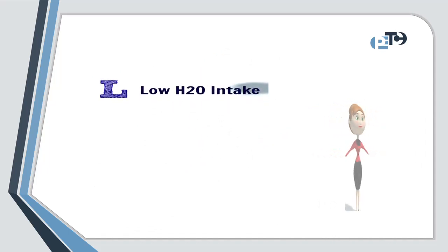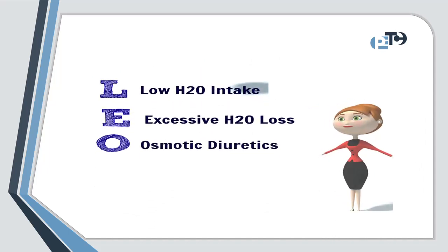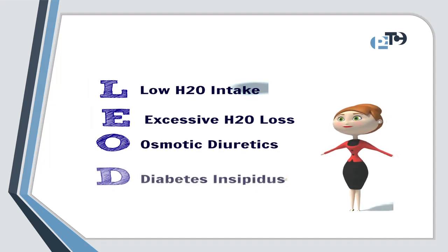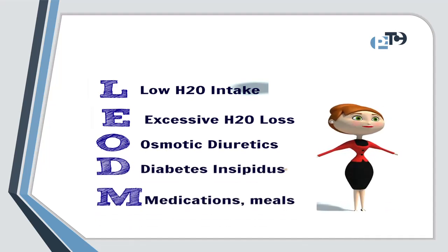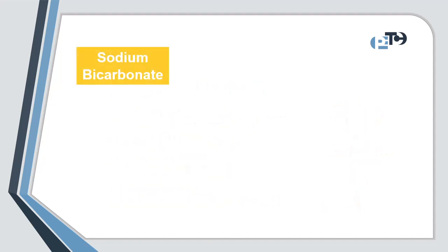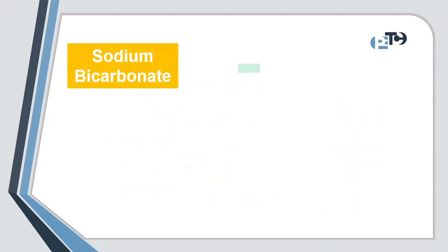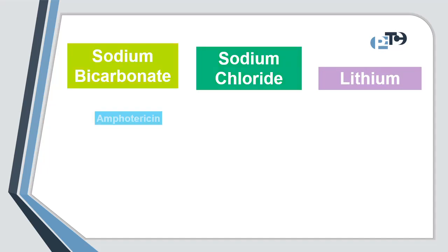Some causes of hypernatremia include inadequate water intake, excessive water loss, hypertonic fluid administration, and diseases such as diabetes insipidus. Some medications can also lead to hypernatremia, like sodium bicarbonate, sodium chloride, and lithium, which can cause nephrogenic diabetes insipidus.